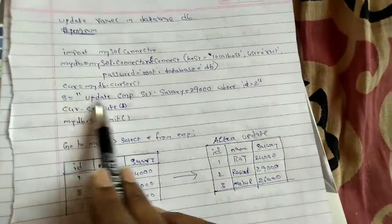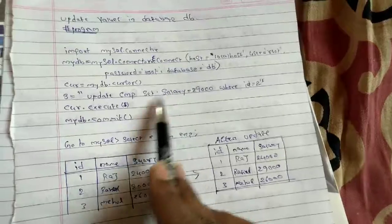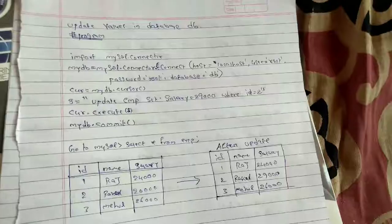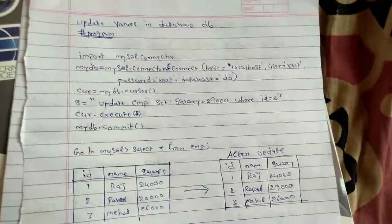So the yes variable will take your commands and execute using the execute command, and make changes using the commit command. So this is how update will be done in a database. Thank you.